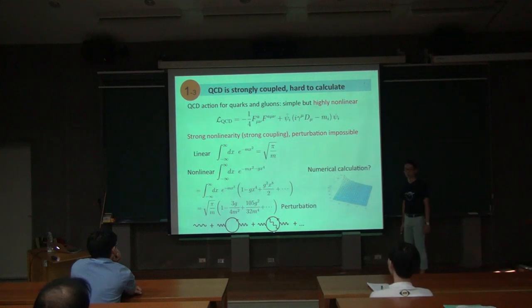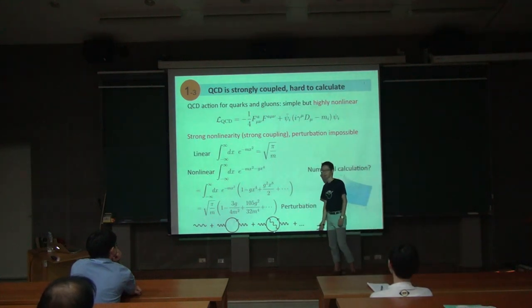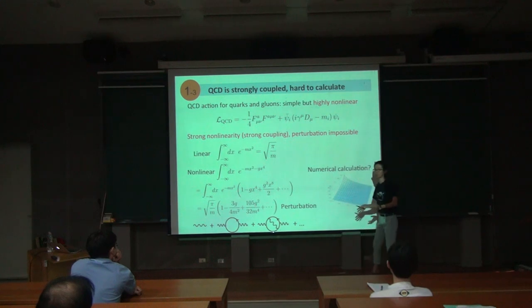If g is very large, and it is the case for QCD where the coupling constant is very large, you cannot use this. And actually, this problem is really a serious problem.